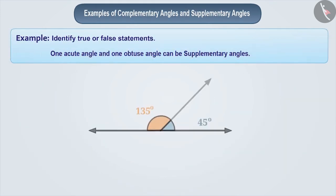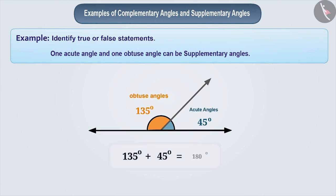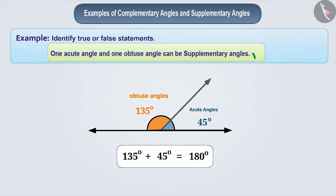Remember: if one angle is acute and the other is obtuse, then their sum can be 180 degrees, which means they can be supplementary angles.